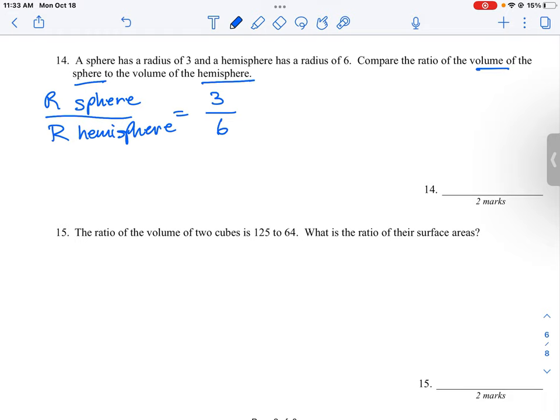Now the radius, remember, is a linear measurement, so it just goes out in one direction. So the radius of the sphere we can compare directly to the radius of the hemisphere.